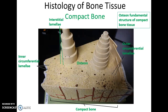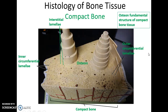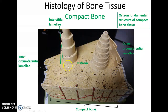Other areas of lamellae not organized into osteons include circumferential lamellae, which run around the very inside and very outside of the bone structure — called outer and inner circumferential lamellae respectively. There are also interstitial lamellae — small patches of bone found between osteons that are remnants of old osteons from the remodeling process.